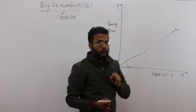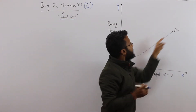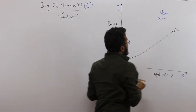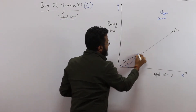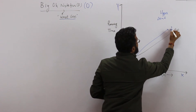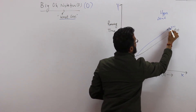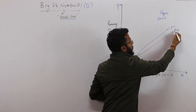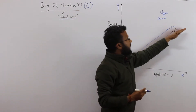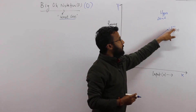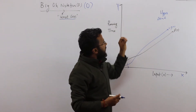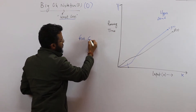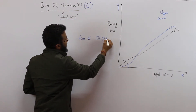fn is the running time of the algorithm. Now, if we can upper bound fn by some other function of n called gn — specifically by the constant multiple c times gn, where c is a constant and gn is a function of n — if we can make a curve above fn, that curve is c times gn. If we can make such a curve, we can say that fn belongs to Big O of gn.